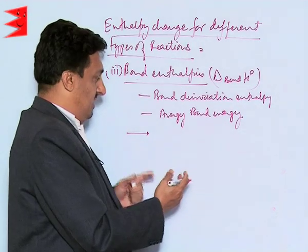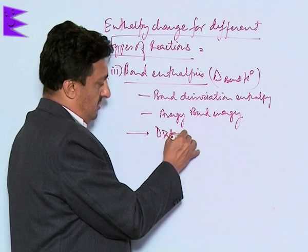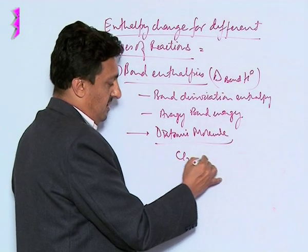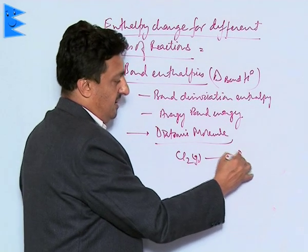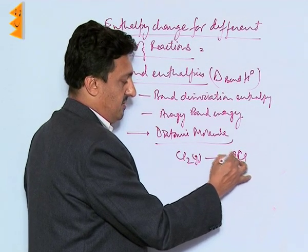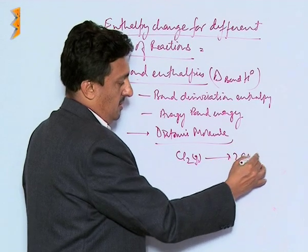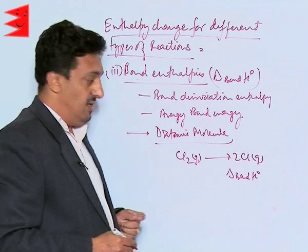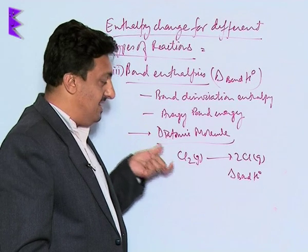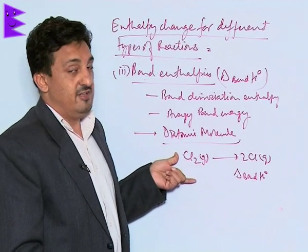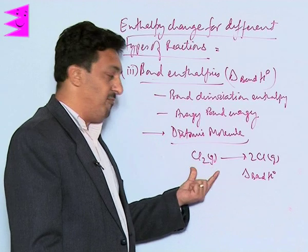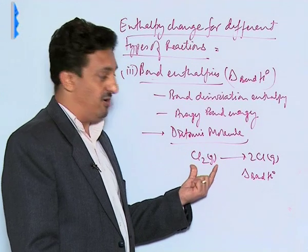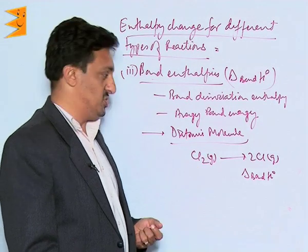If it is a diatomic molecular species — for example, chlorine in the gaseous form — we give energy to get two chlorine gaseous atoms. The enthalpy change involved is called the bond enthalpy of chlorine. Technically, this is bond dissociation energy, because only one type of bond is present. Whatever amount of energy is required to break one mole of Cl–Cl bonds, we call it bond enthalpy or bond dissociation energy.